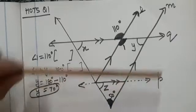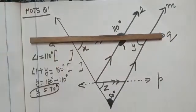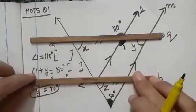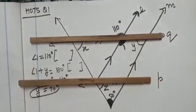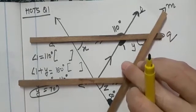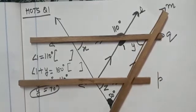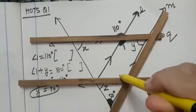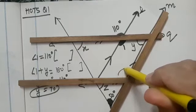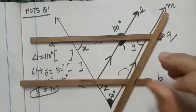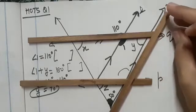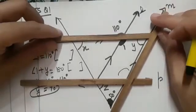Now we are considering lines Q and P. They are parallel to each other, and assume this M as transversal. So you will see that this angle Y and I am marking an angle here.